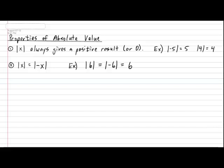So far, these two properties have been kind of boring because they're pretty obvious. The third property gets a little bit more interesting. The third property is the absolute value of a product, and it states that the absolute value of two numbers multiplied together is the same as taking the two numbers apart and each one receiving its own absolute value. So the absolute value of x times y is equal to the absolute value of x times the absolute value of y.